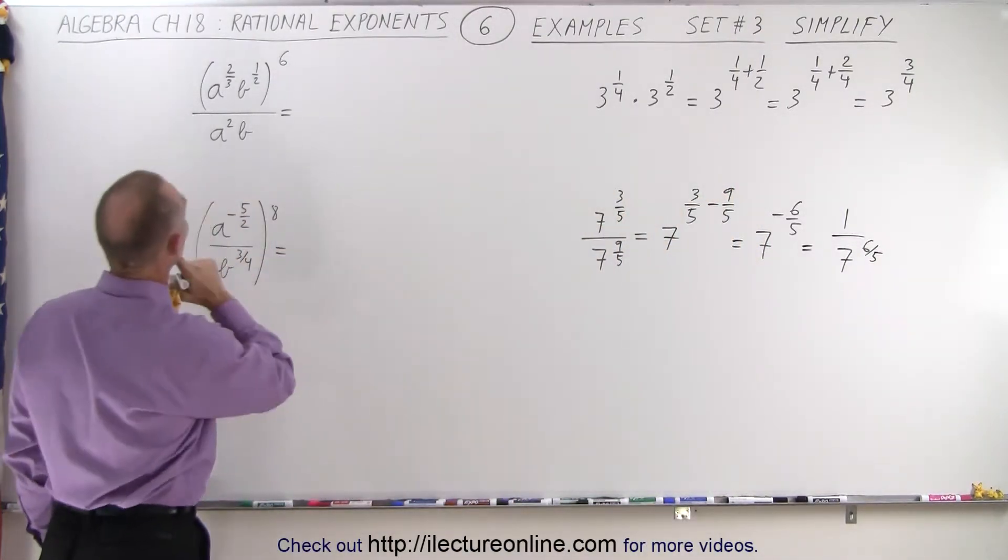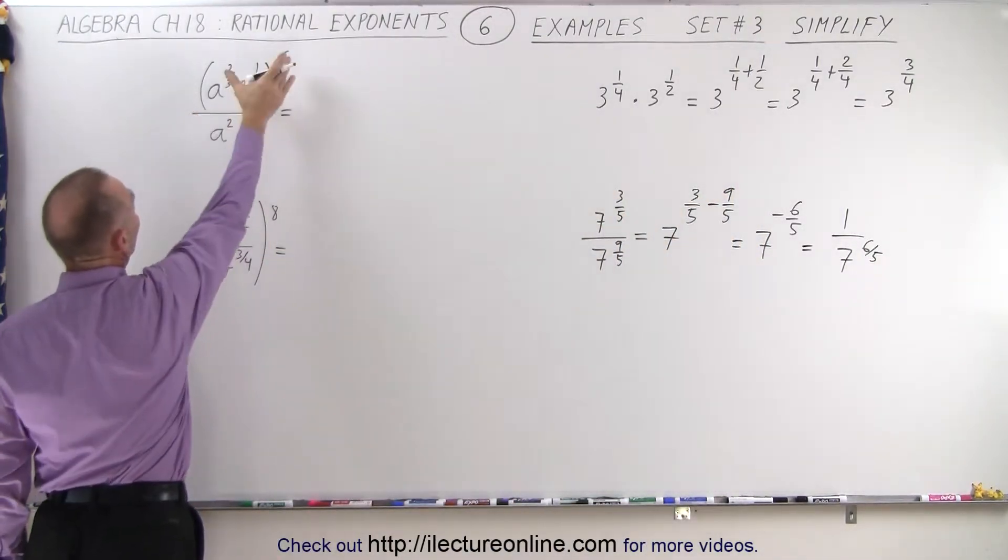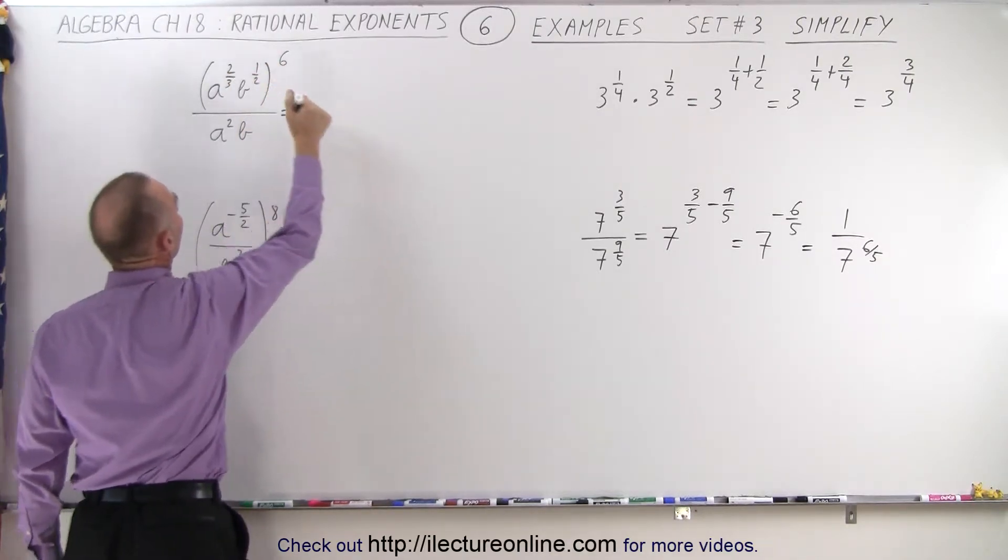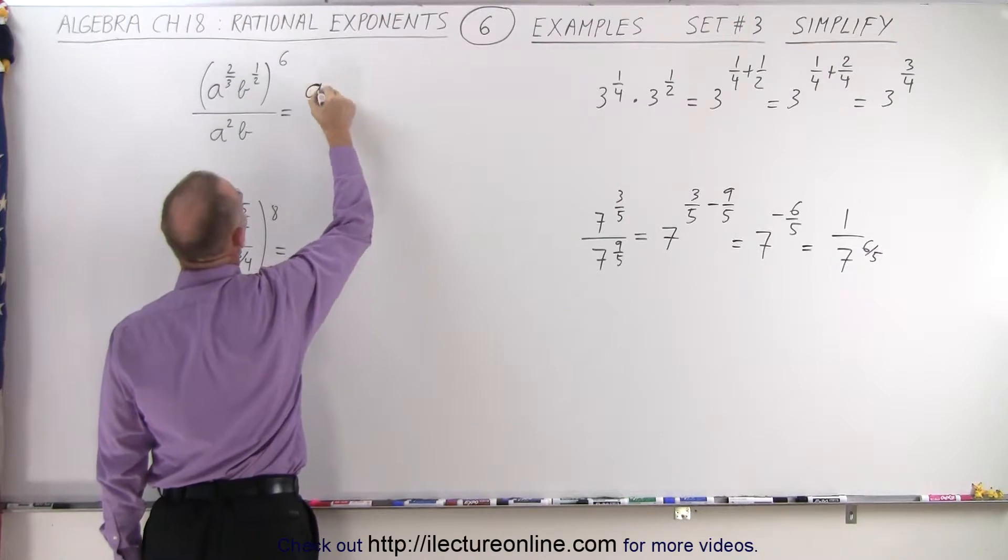Coming over here, notice we have this whole thing raised to the 6th power. Here the rule is that the exponents need to be multiplied in the numerator.